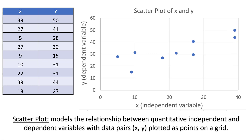Here's the written description of a scatter plot: a scatter plot models the relationship between quantitative independent and dependent variables, with data pairs (x, y) plotted as points on a grid. In statistics, you might also see the word 'explanatory' used instead of 'independent,' and 'response' used instead of 'dependent.'